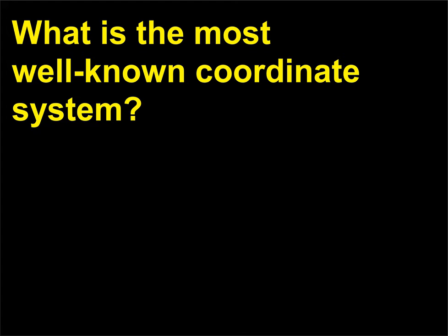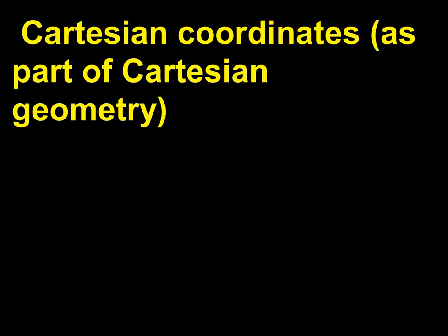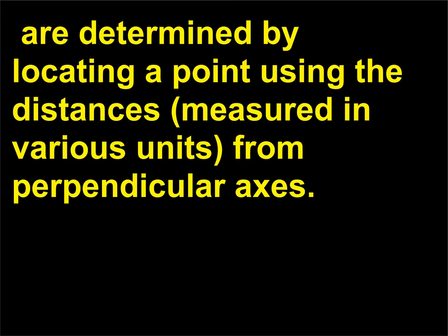What is the most well-known coordinate system? The most well-known coordinate system is the Cartesian coordinate system. Cartesian coordinates, as part of Cartesian geometry, are determined by locating a point using the distances, measured in various units, from perpendicular axes.